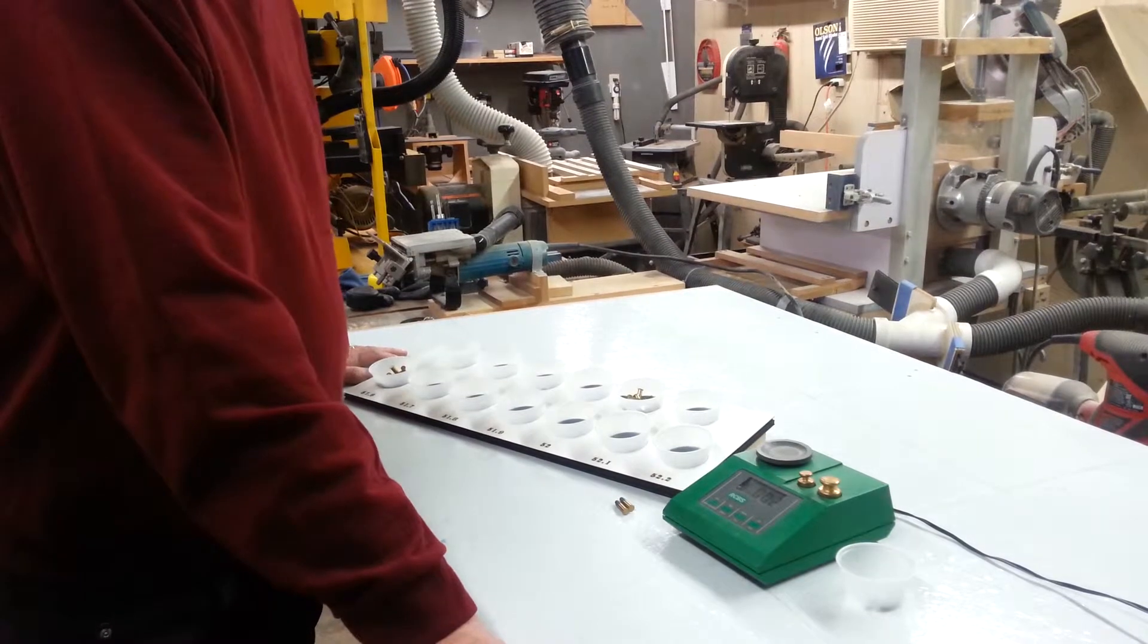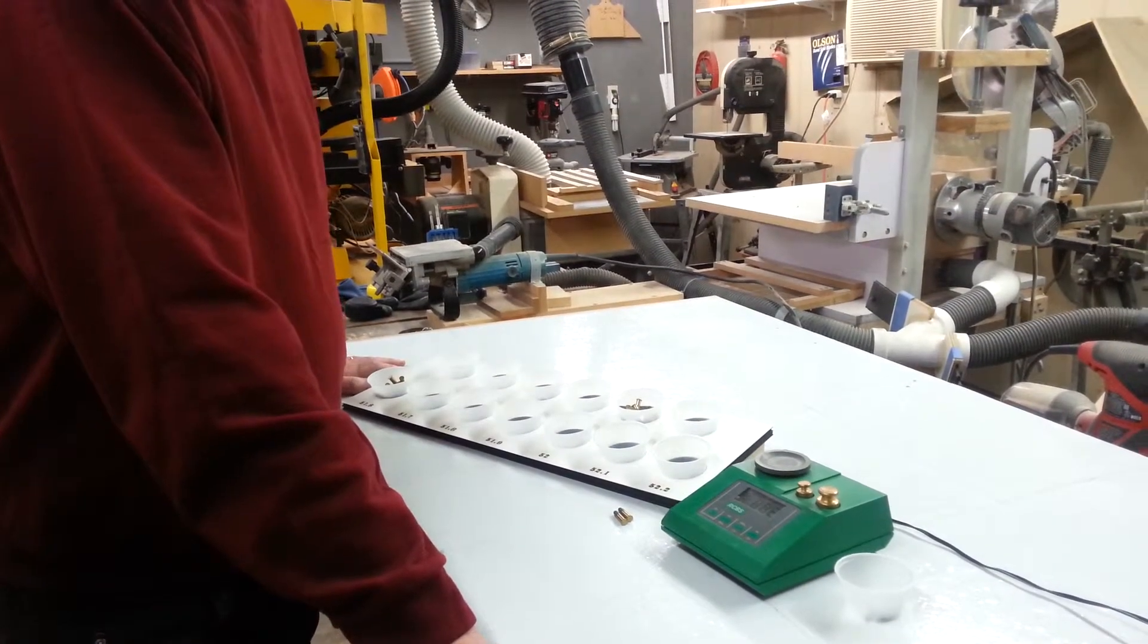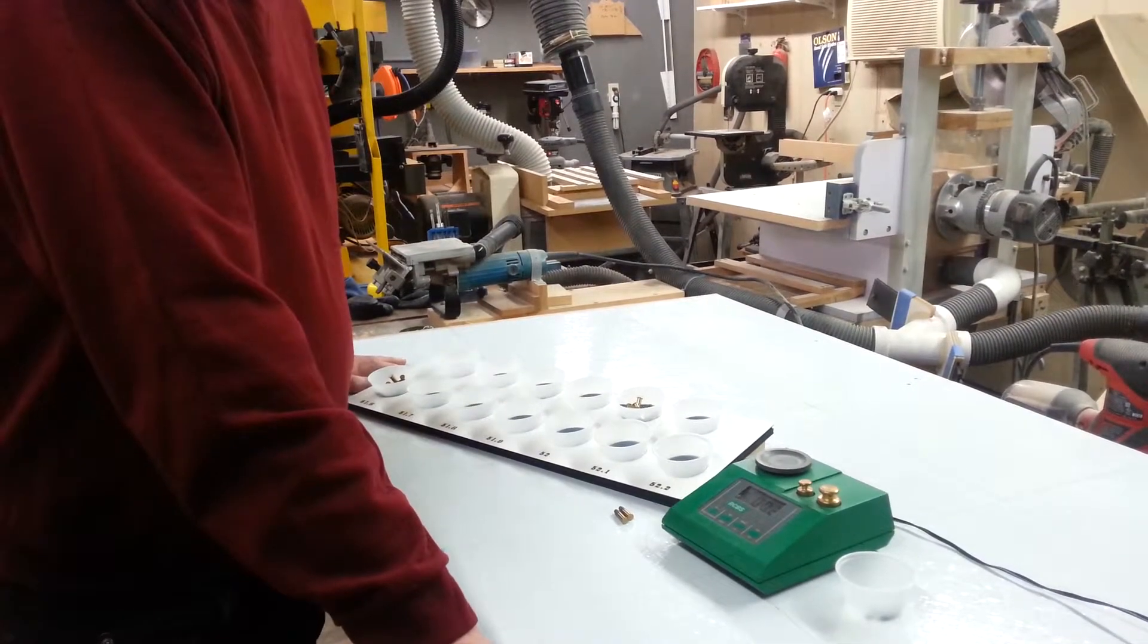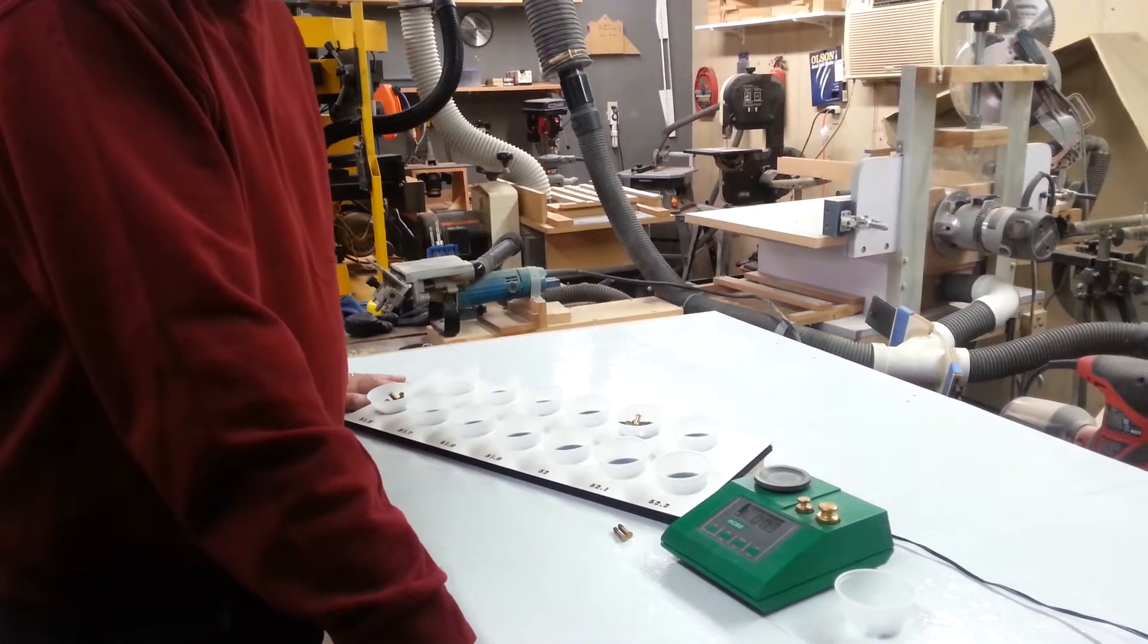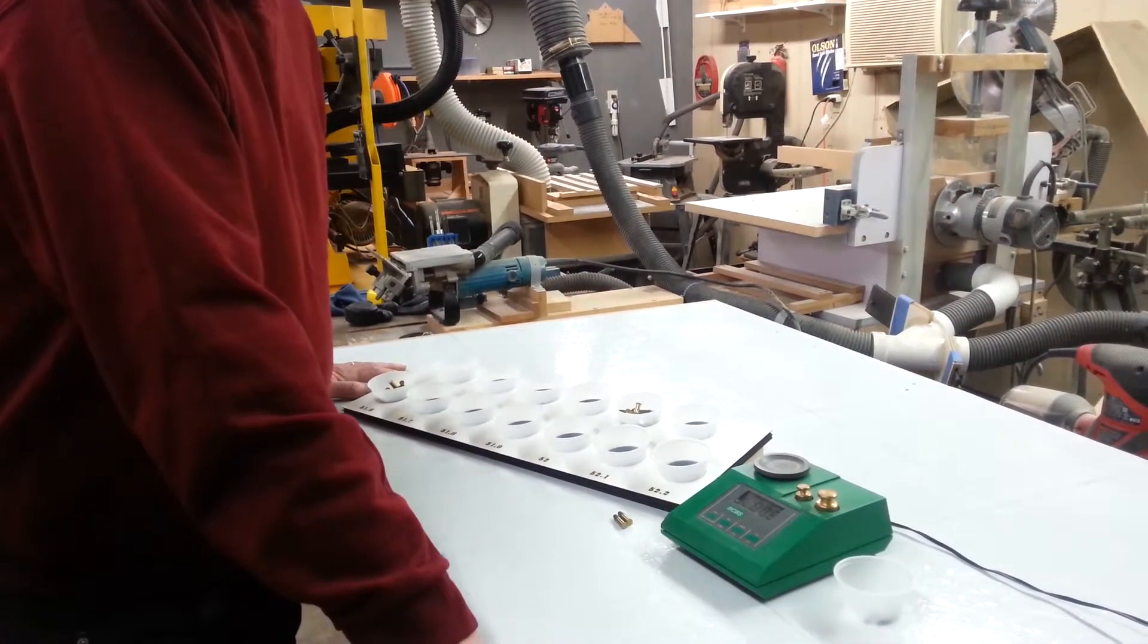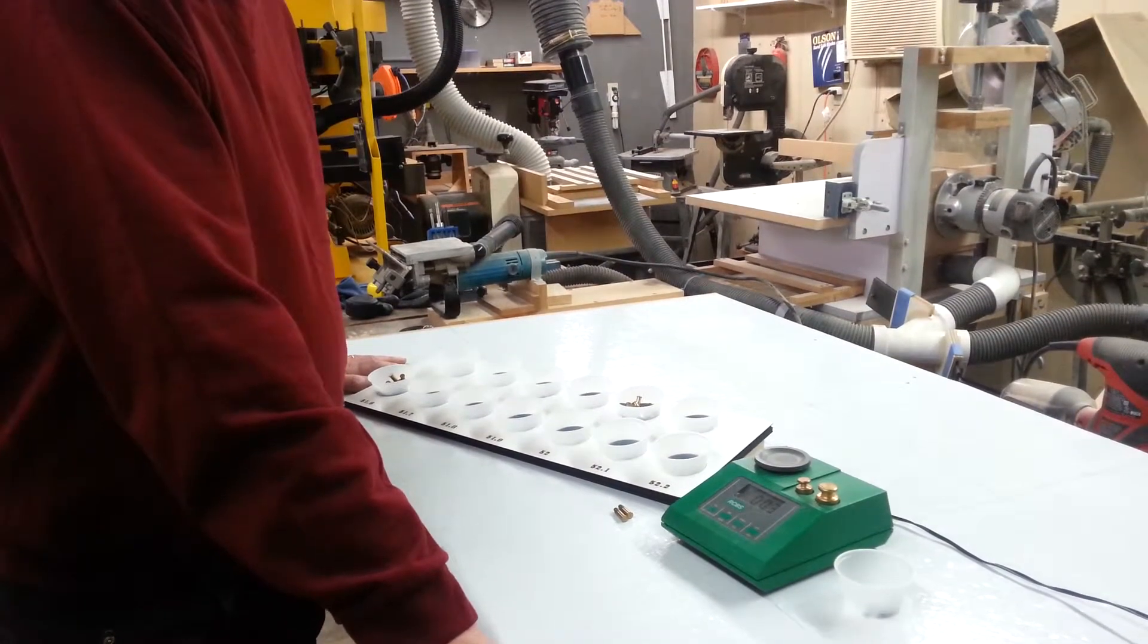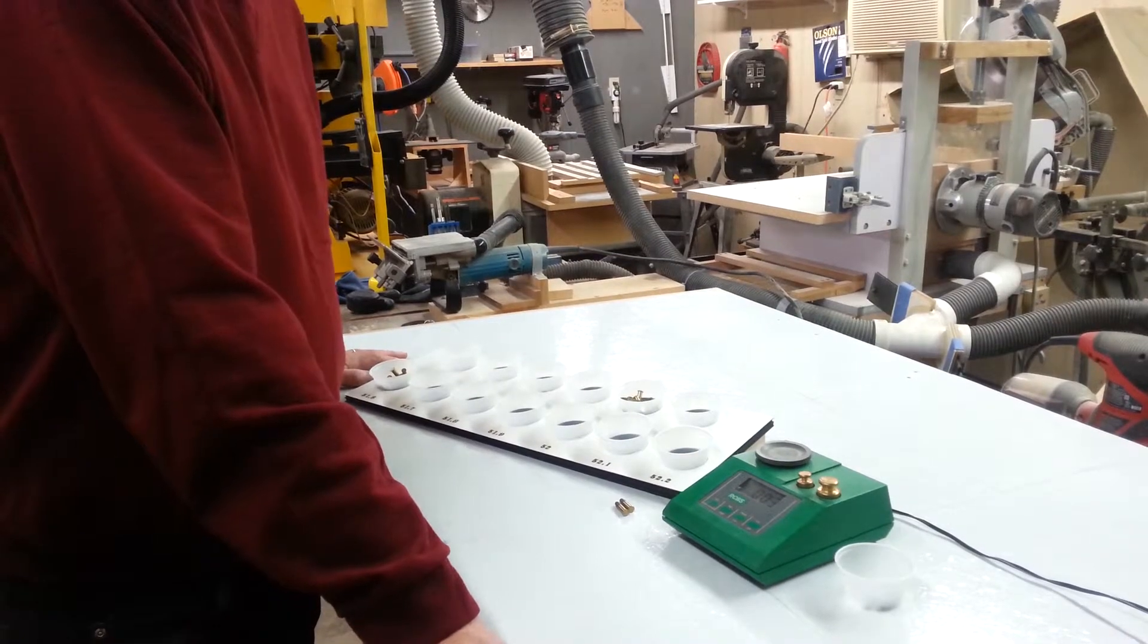What you want to do is have a good firearm, something you're comfortable with. You're going to want to find some ammunition that your firearm likes. If you can get your firearm to shoot two MOA, which is actually two inches at a hundred yards or an inch at 50 yards groups, then we're going to show you how to cut that down by at least half.